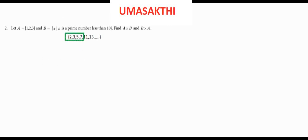So we write the A set and B set. A equals {1, 2, 3}. Next, B values — we have to choose prime numbers less than 10. So B equals {2, 3, 5, 7}.